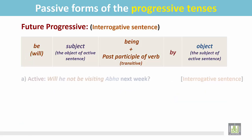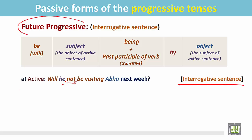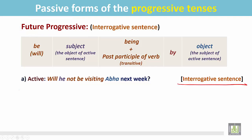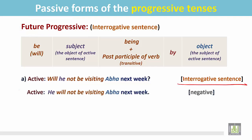Another sentence. This is an interrogative sentence in the negative in the future progressive. First, change this interrogative sentence into a statement. The statement begins with the subject: 'He will not be visiting Abha next week.' This is a statement in the negative. In this active sentence — he will not be visiting what? — 'Abha', and this is the object for the verb 'visiting'.